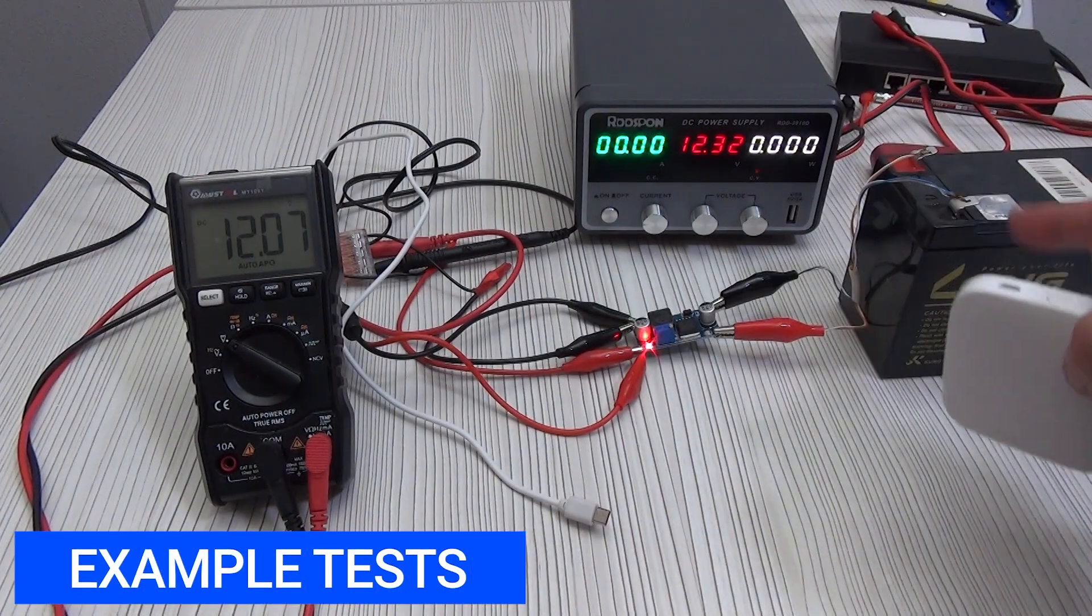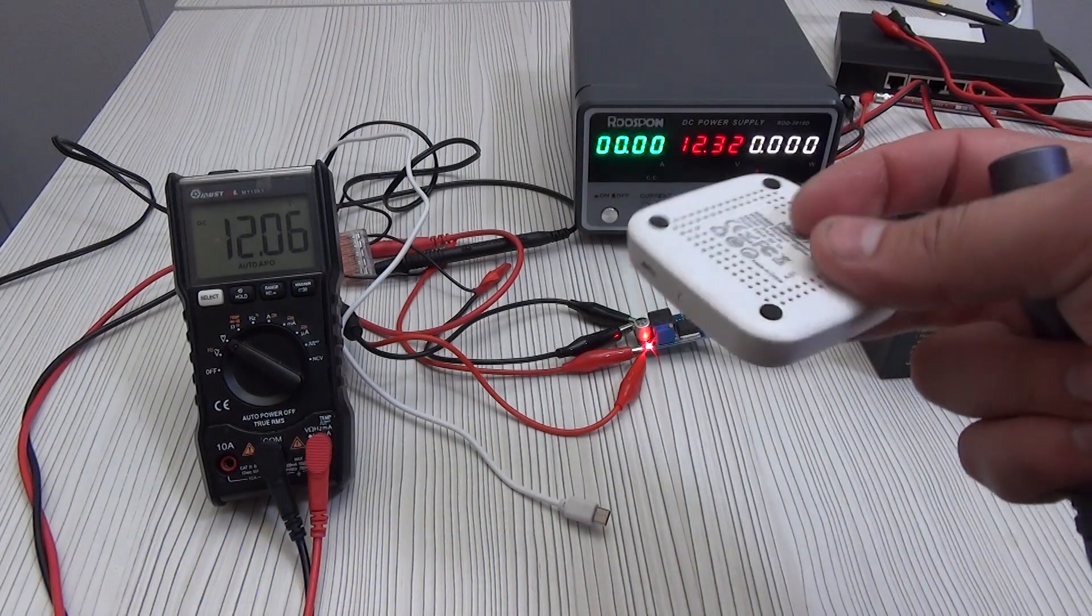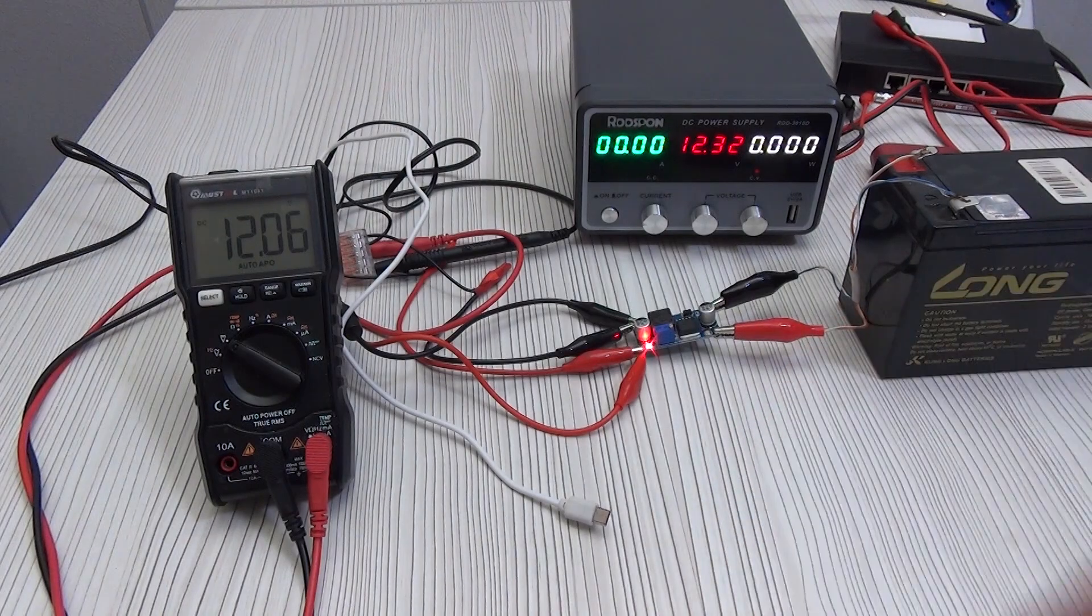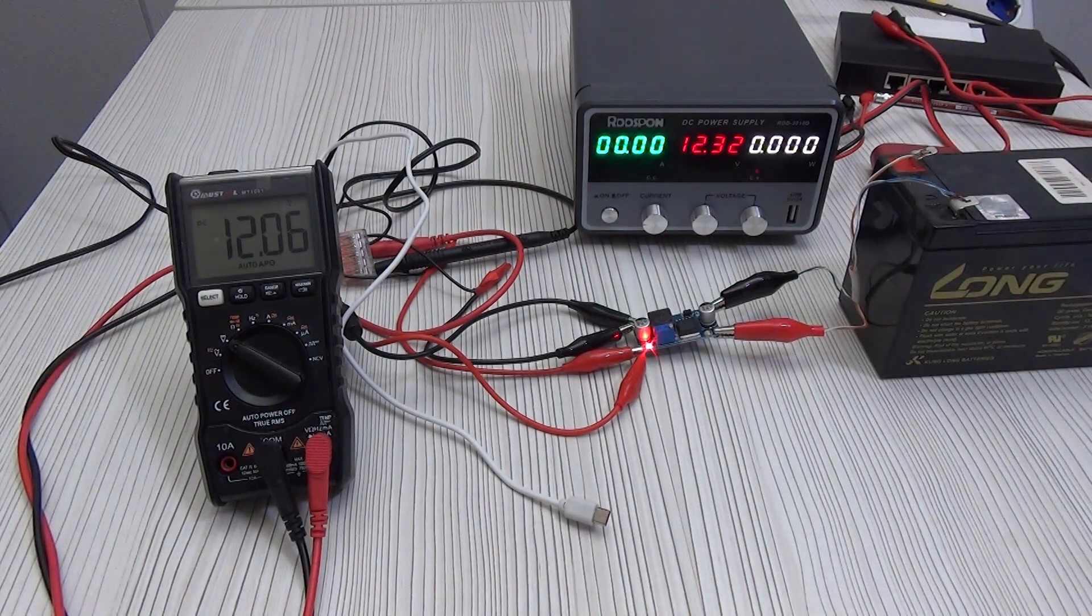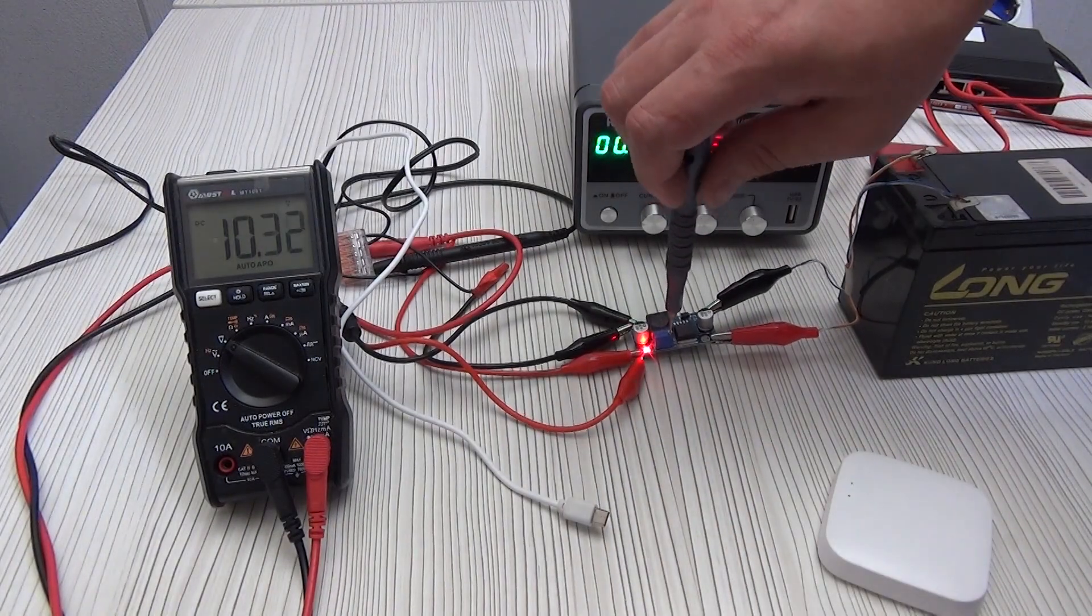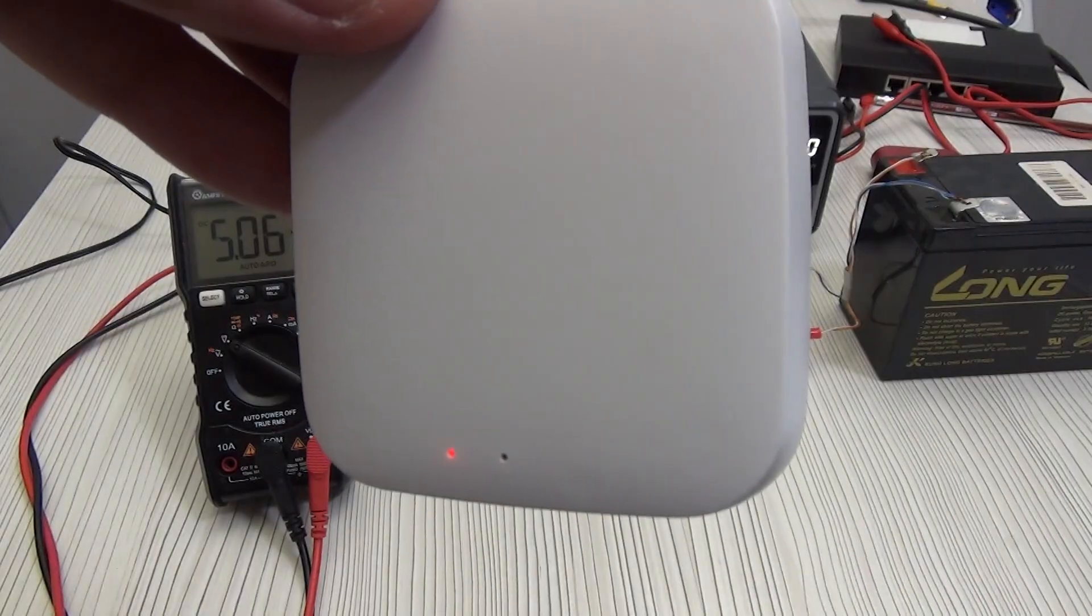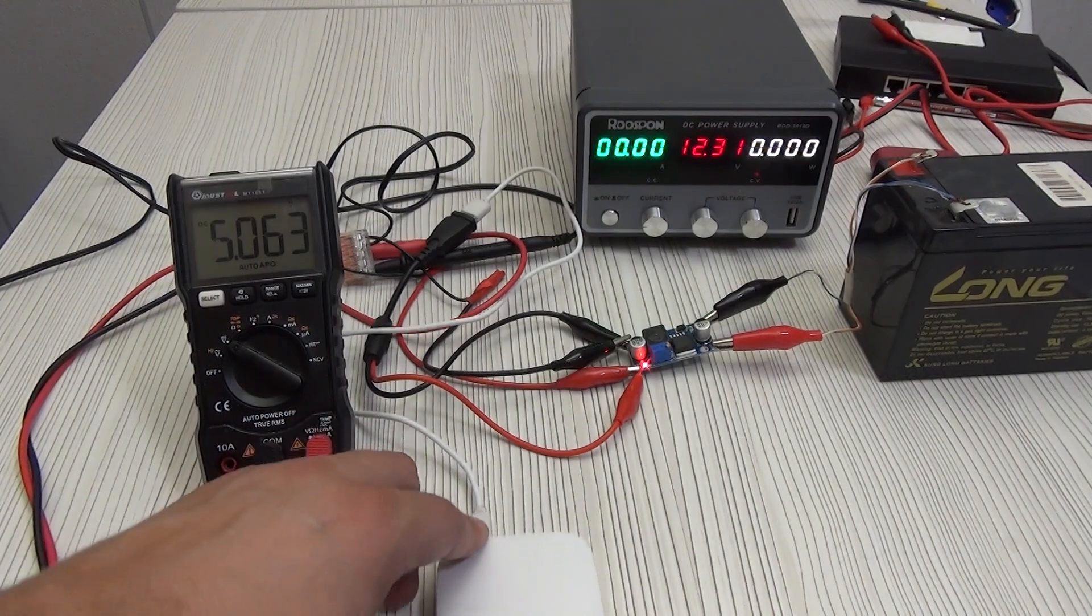Now let's consider the option when we already have a battery, for example 12.4 volts. And I need to connect to it a part of the smart home that uses 5 volts. We connect 12.4 volts to the IN contacts, do not confuse the polarity, otherwise the board will simply burn out. We set the required voltage, 5 volts, with a trimmer resistor. As you can see, the smart home gateway has started up and is working without problems.